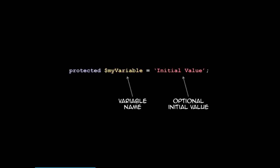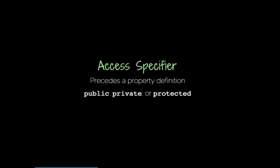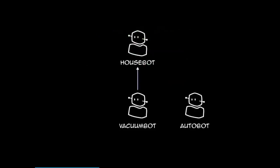That extra thing is called an access specifier. An access specifier precedes a property definition and has three possible values: public, private, or protected.